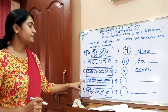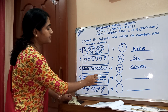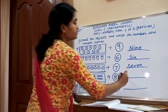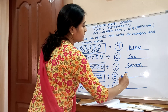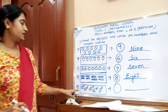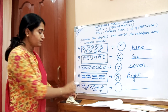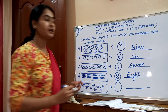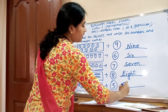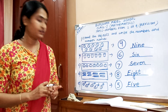Box number D — how many pencils? Count: one, two, three, four, five, six, seven, eight. There are eight pencils. Write 8 and number name: E-I-G-H-T. Box number E — how many fishes? Count: one, two, three, four, five. Five fishes. Write 5 and number name: F-I-V-E. I hope you all have understood.